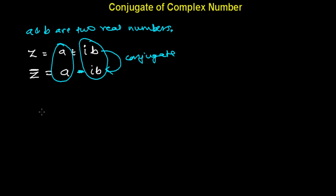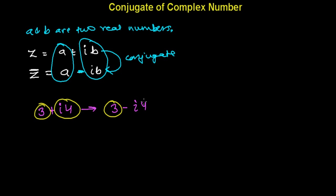Let's say I have a complex number 3 plus 4i. Then the conjugate of 3 plus 4i will be 3 minus 4i. If you look, the real part is the same — 3 and 3 — and the imaginary part magnitude is also the same, but if you look at the sign of the imaginary part, here it is plus and there it is minus.